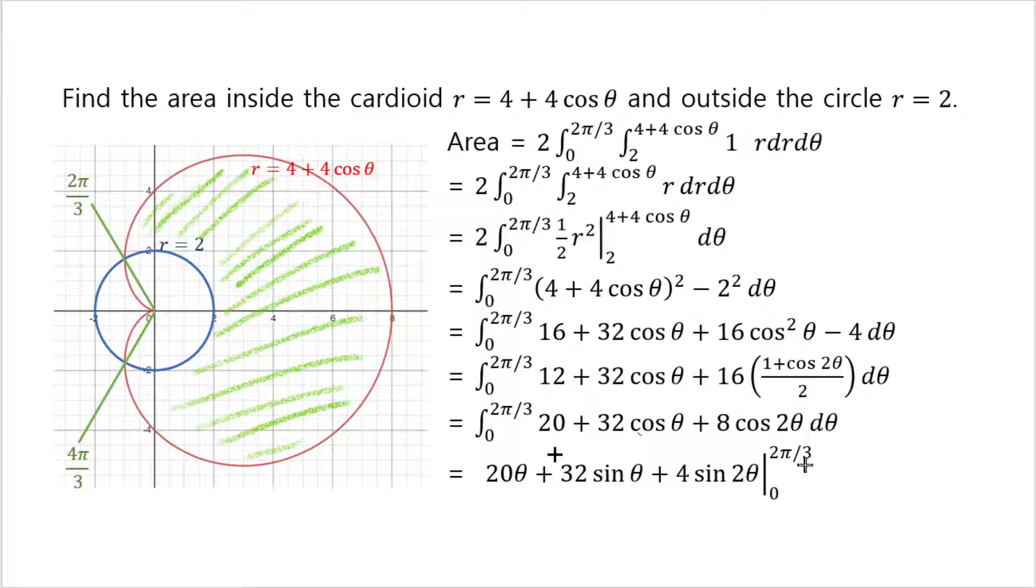Now it remains to plug in these endpoints into these thetas, and then you subtract. But one thing that you should see is that if you plug in 0 in here, because sine 0 is 0, all of these become 0 when you plug in 0. So the only thing that survives after plugging this in is when you plug in 2 pi over 3. I also use the fact that sine of 2 pi over 3 is radical 3 over 2, and sine of 4 pi over 3 is negative radical 3 over 2. If you simplify, that is the final answer. That is the area of this region.